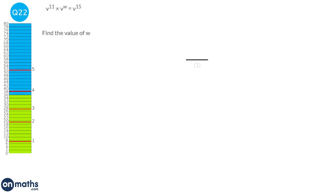When you multiply powers with the same base — here they all have base v — you add the powers. We need to find what we add to 11 to get 15. 11 plus 4 is 15, so w equals 4.